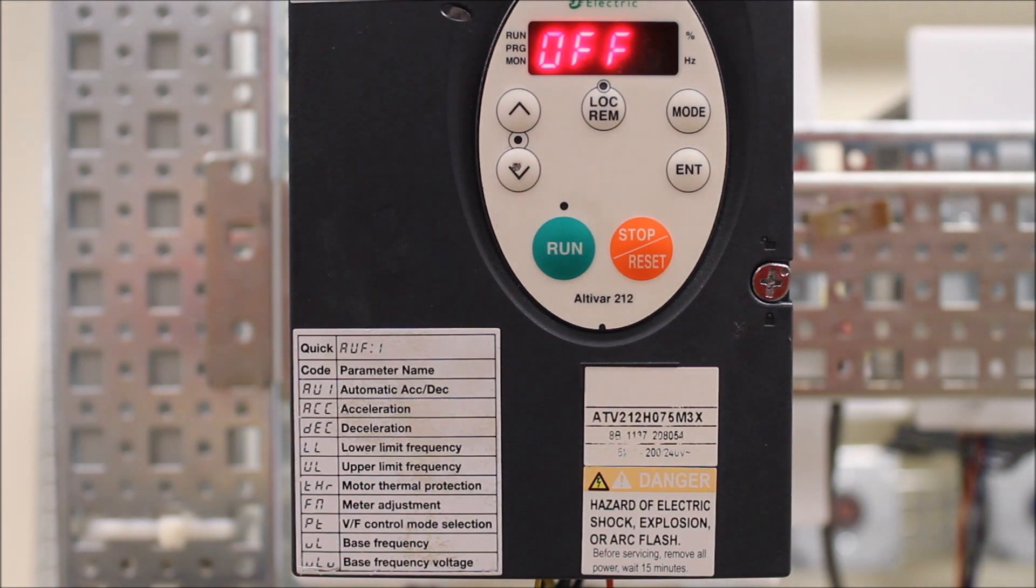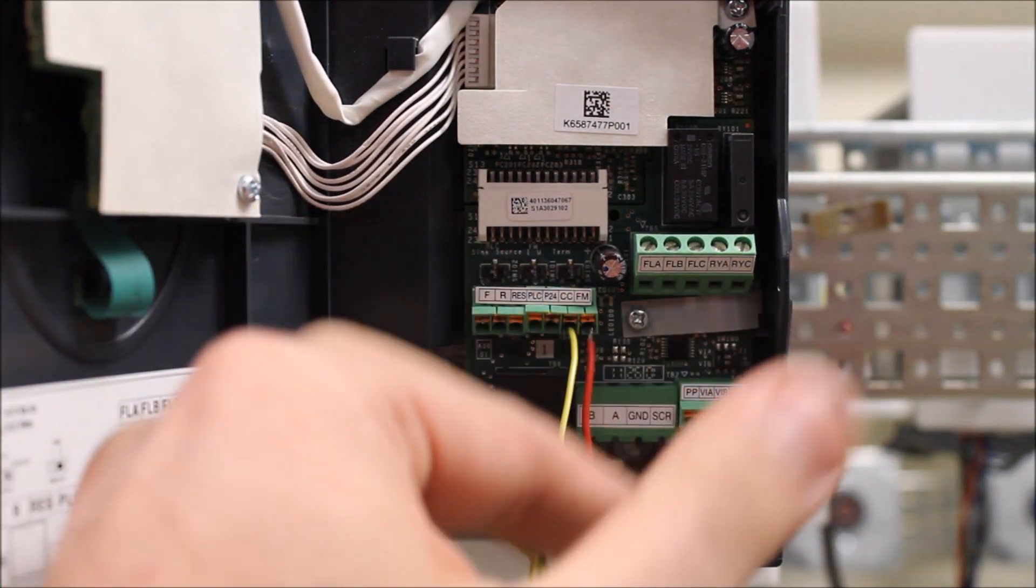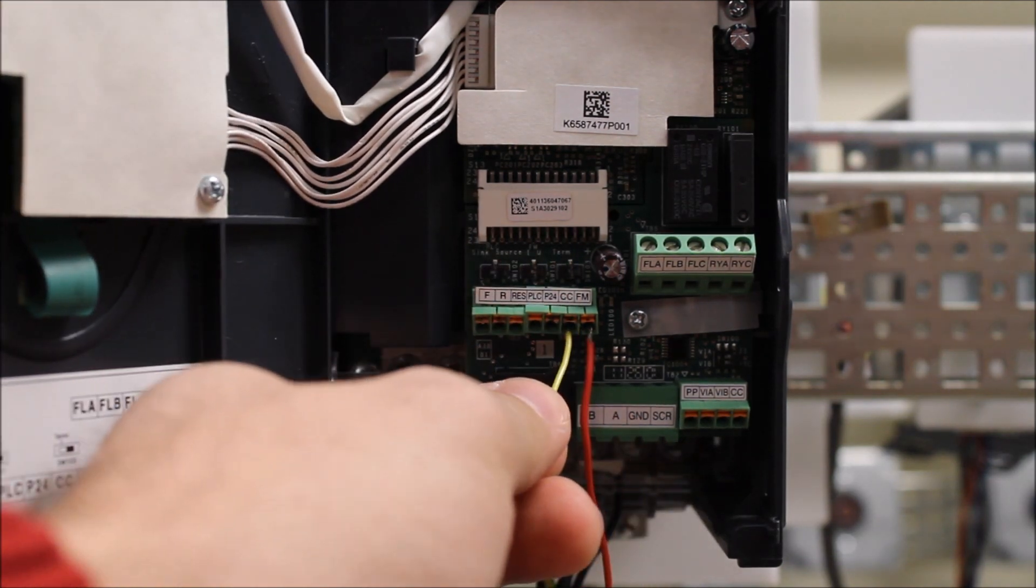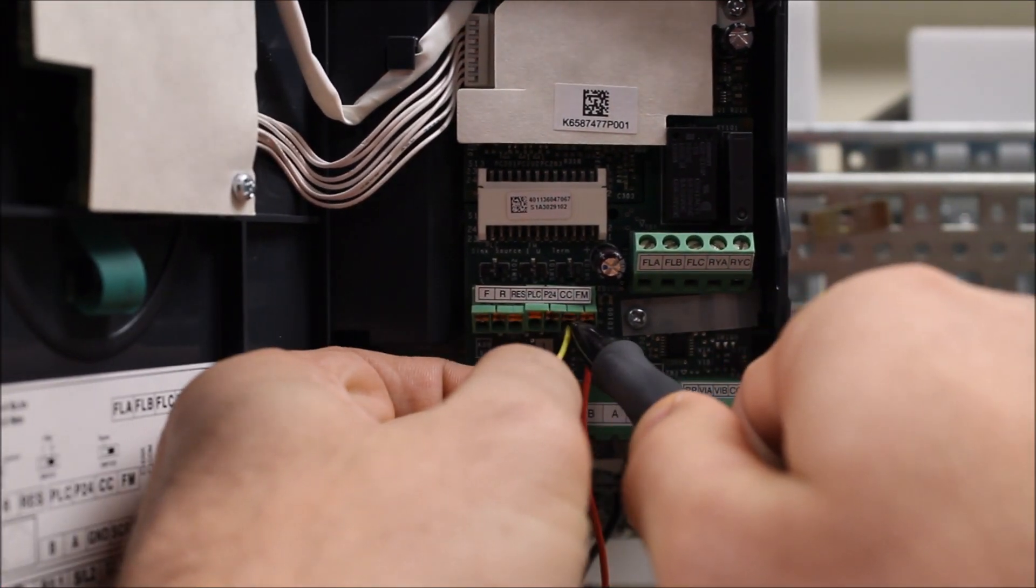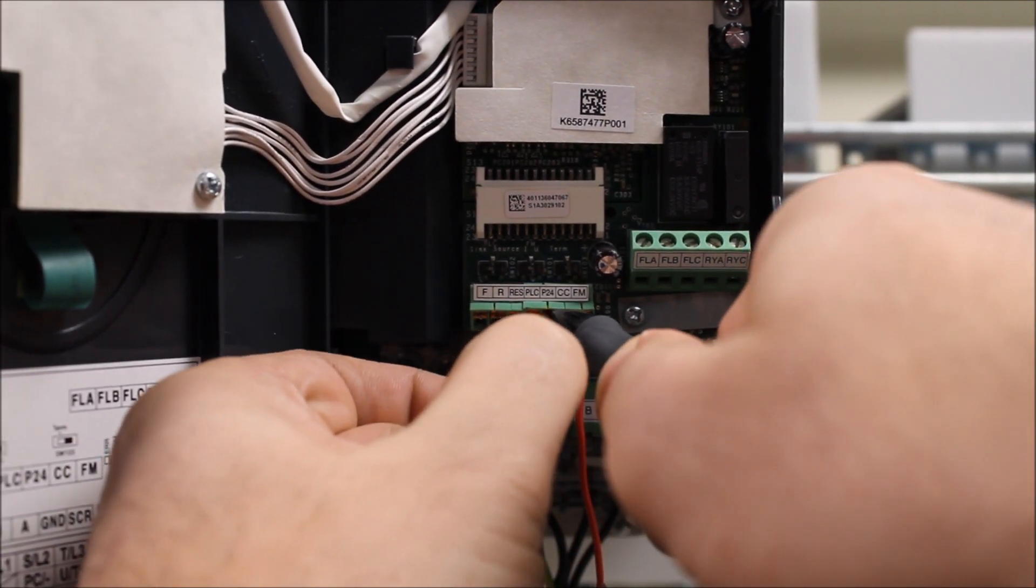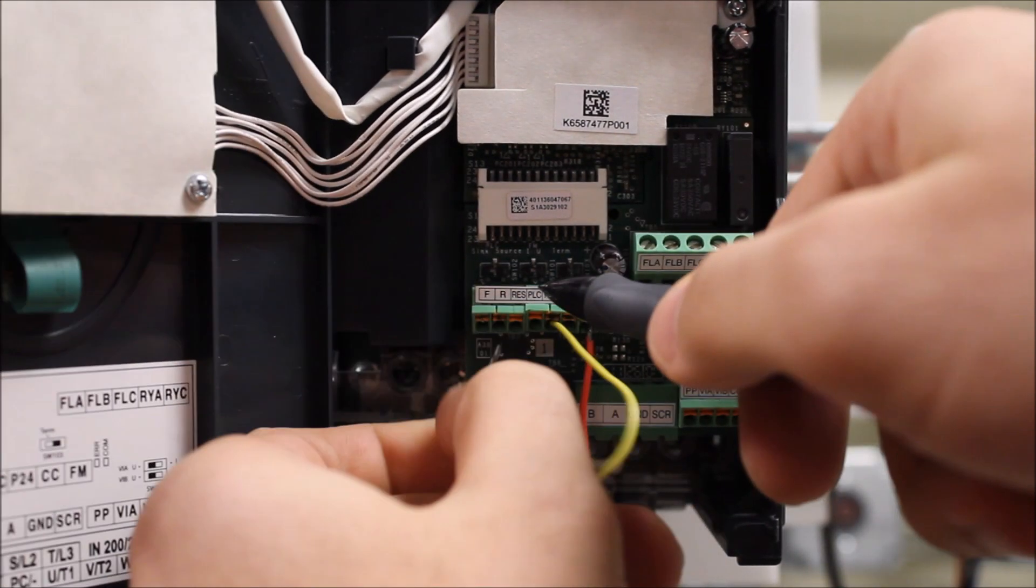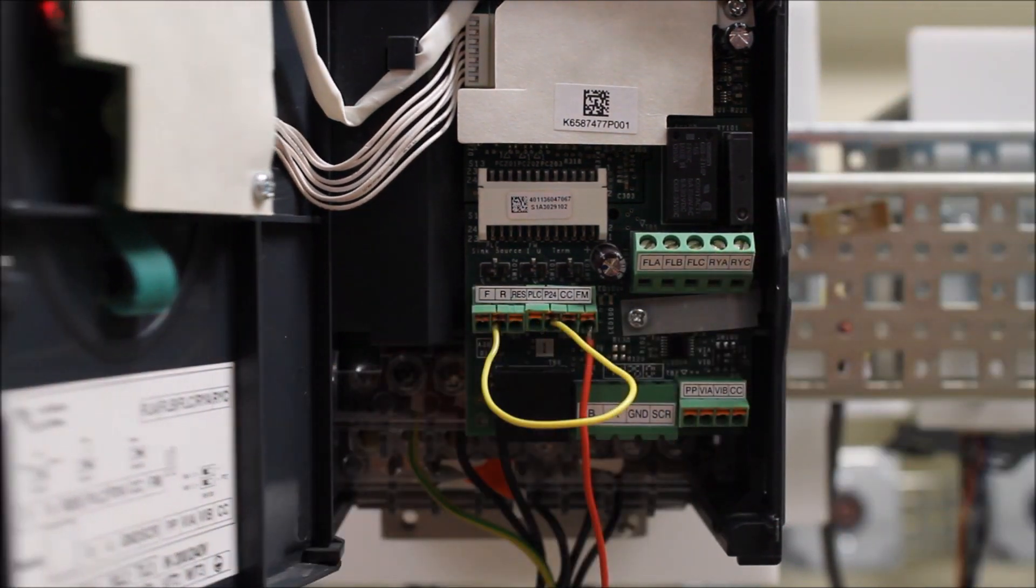So just to show you here, if I was to bring in a 24 DC directly into the R, we can actually go ahead and do that right now. It should be able to go away for us there as these terminals are looking for a straight 24 DC signal.